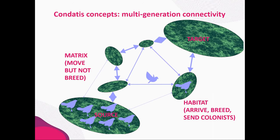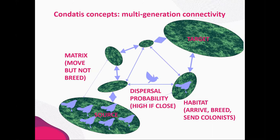We also have some landscape between patches called the matrix, where species can move but can't breed. We link patches together with a dispersal probability, which is higher if patches are closer together. The distance an individual can move in its lifetime is represented by one of the blue arrows. Condatus considers not individual movements, but the step-by-step movements of a species over many generations that lead to that species expanding or changing its range.